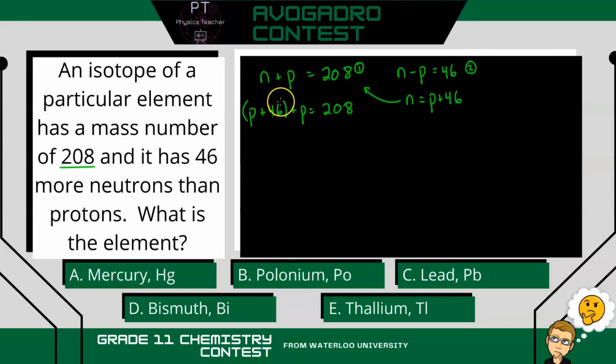Now we collect like terms. So p and p give us 2p. And bring 46 to the other side of the equation. And we have 208 minus 46.